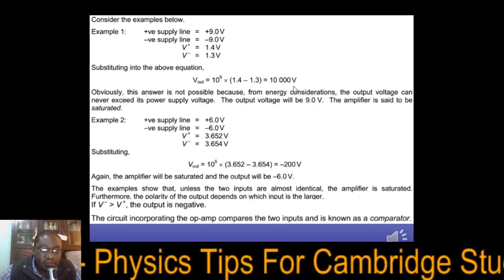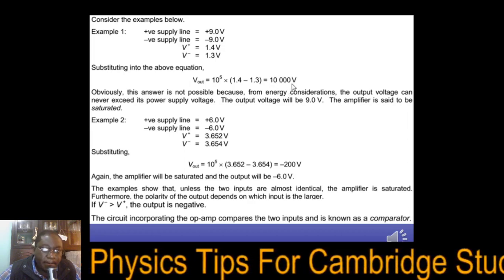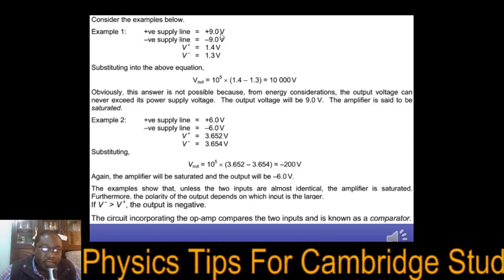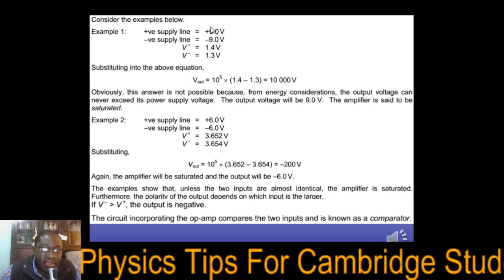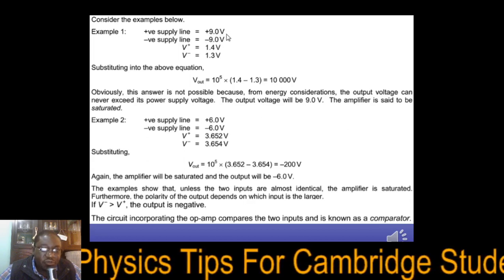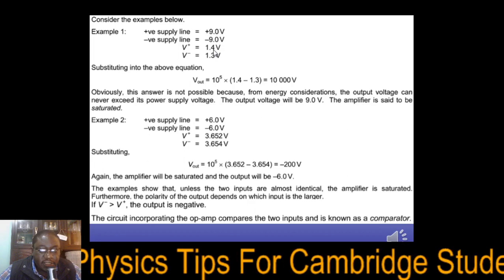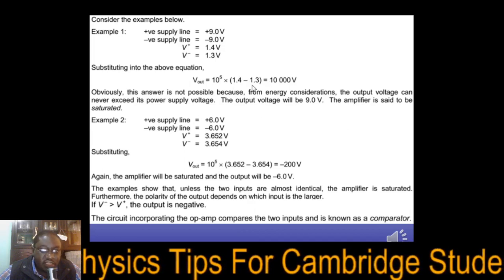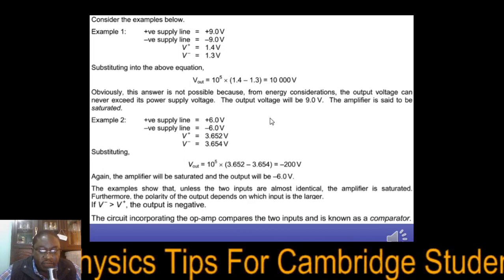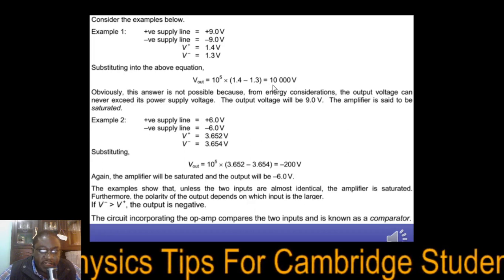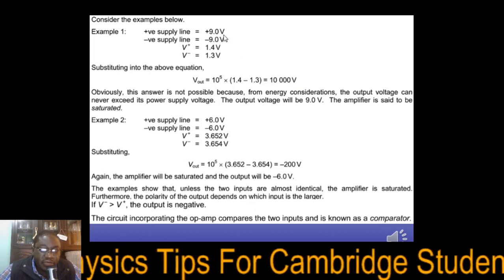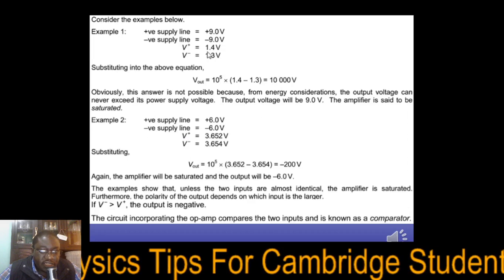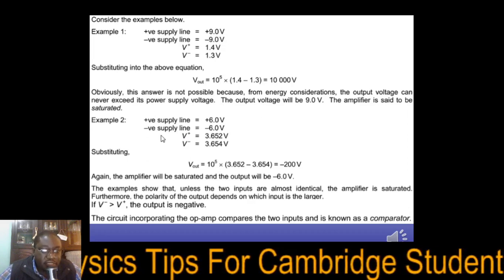The result comes to 10,000 volts. According to the law of conservation of energy, this is not possible. So what happens is the output tries to reach this value as much as it can, but is limited by the supply voltages. The supply is 9 V, so you can't go beyond 9 V — it just saturates at positive 9 V. So the output becomes 9 V. When the theoretical answer is greater than the supply voltage, we say the operational amplifier is saturated.